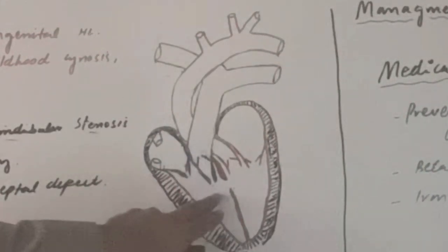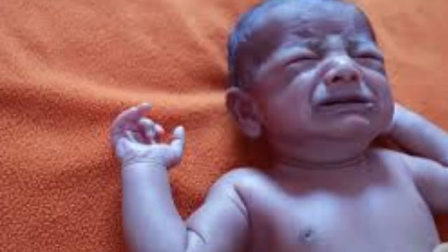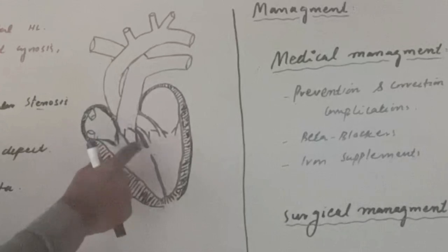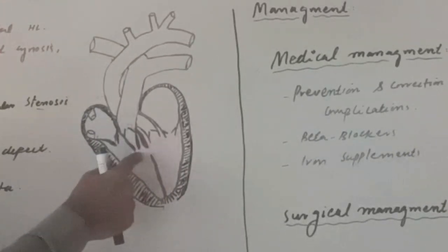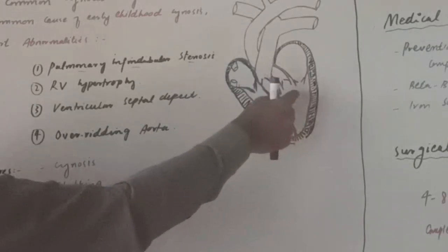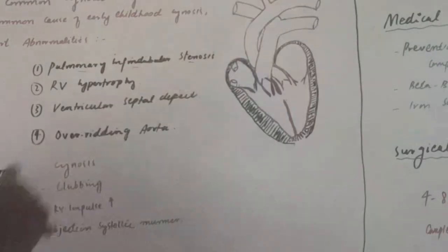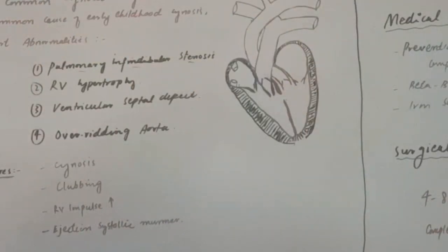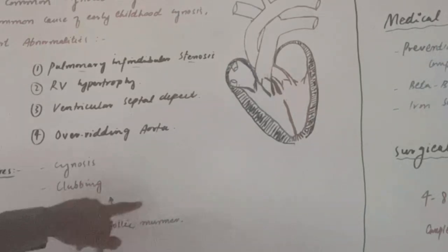Now, what are the clinical features? The clinical features include cyanosis — as discussed, TOF is the most common cause of early childhood cyanosis. Cyanosis occurs because the right ventricle contains deoxygenated blood, and due to pulmonary infundibular stenosis, most of the deoxygenated blood passes through the septal defect into the left ventricle and then through the aorta into the body. There will also be clubbing, because most of the blood circulated in the body is deoxygenated.